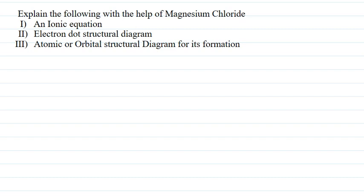Hello students. The question says: Explain the following with the help of magnesium chloride. First is an ionic equation. Second is an electron dot structure diagram. Third is an atomic or orbital structure diagram for its formation. So for this question, we have magnesium chloride — we need an ionic equation, an electron dot structure, and an atomic structural diagram for its formation. First we discuss the ionic equation.